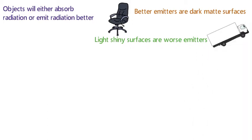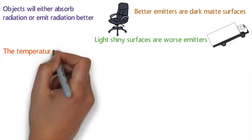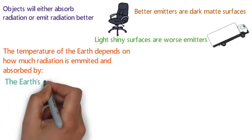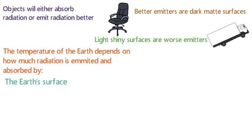We can use these ideas to look at the temperature of the earth. The temperature of the earth is dependent upon how much of the sun's radiation is absorbed by the earth's surface or the atmosphere and how much is emitted from them.